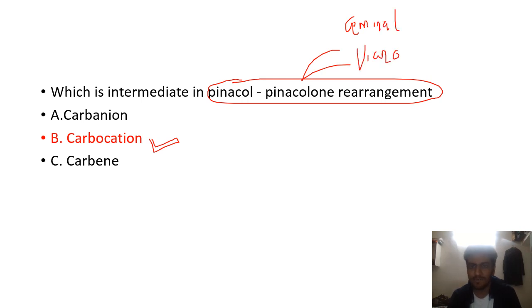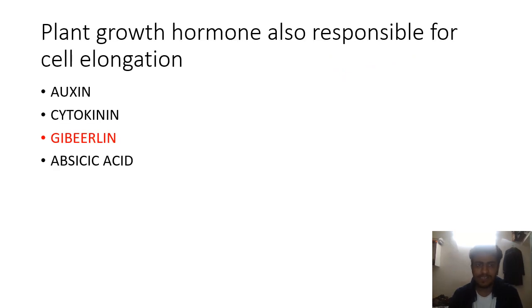Next up we had plant growth hormones responsible for cell elongation. Last year gibberellins was the answer for Bakanae disease caused by Gibberella fujikuroi.